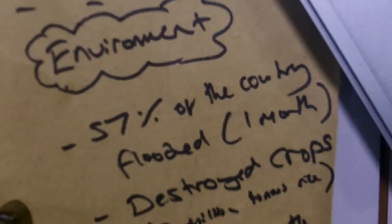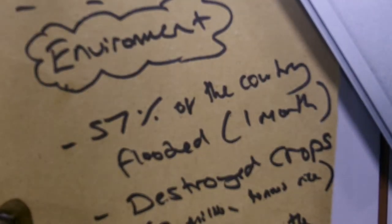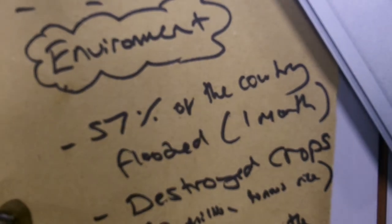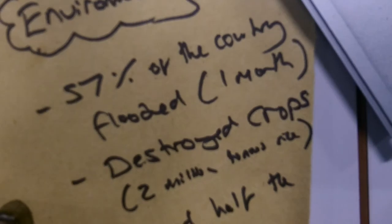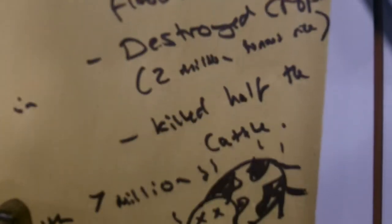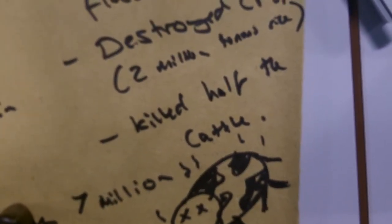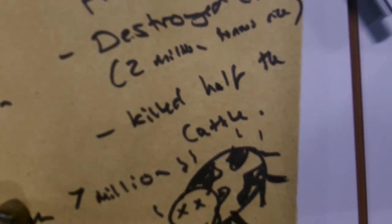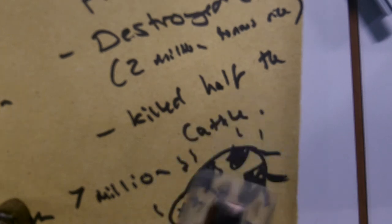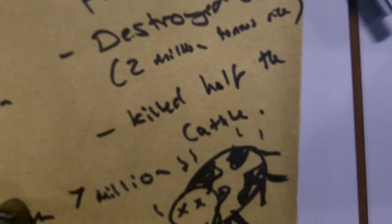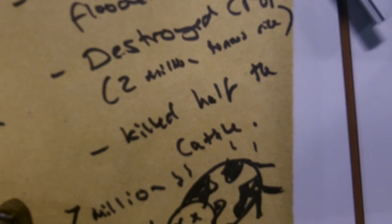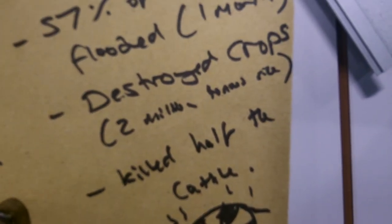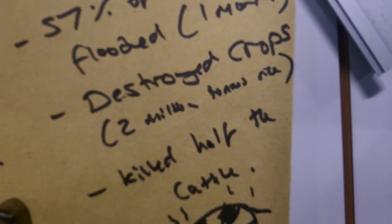The environmental impacts of the floods were that 57% of the country was flooded at its peak, which lasted for a month. This ended up killing half of the cattle and general livestock. Not only did it kill the cattle, it also destroyed a large amount of crops lying on the land, totalling around two million tons of rice, just to name one example.